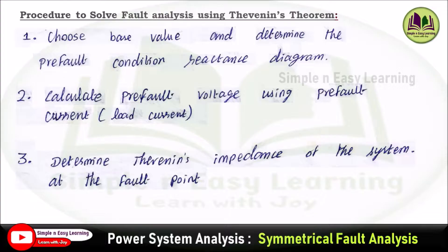Third step: determine the Thevenin's impedance of the system at the fault point. Based on the fault location, we need to calculate the Thevenin impedance, which will be considered as Z_TH.